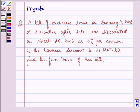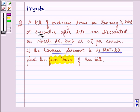Hello friends, how are you all doing today? The question says a bill of exchange drawn on January 4, 2003 at 5 months after date was discounted on March 26, 2003 at 3% per annum. If the banker's discount is Rs. 1207.20, find the face value of the bill.